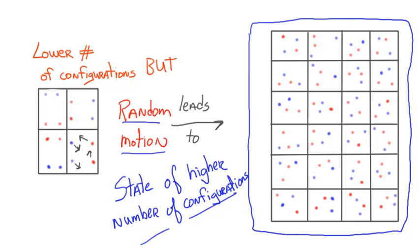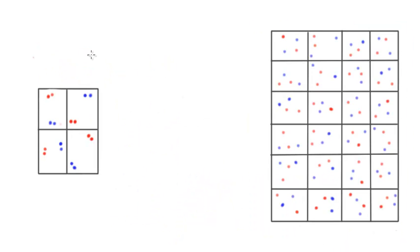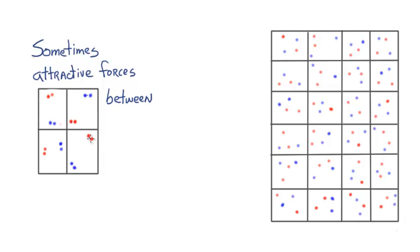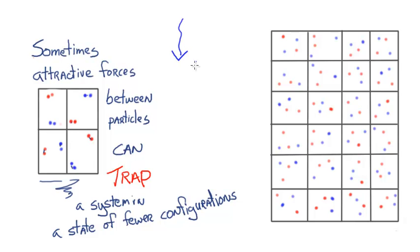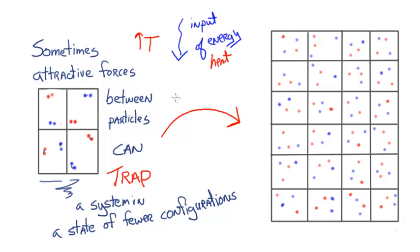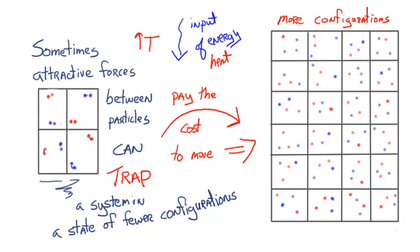We also have to take into consideration attractive forces, or the potential energy between particles. For example, imagine there's an attractive force between the particles represented in the left-hand part of this diagram. It can be such that those attractive forces trap a system in a state of lower number of configurations overall. The attractive forces are limiting the number of configurations because they hold the particles together, and there's an energy cost to move to one of the higher configurational states. This is a situation where potential energy favors the lower configurational state, but as we increase temperature, the higher potential energy state — where the particles are separated or mixed — is more favored.